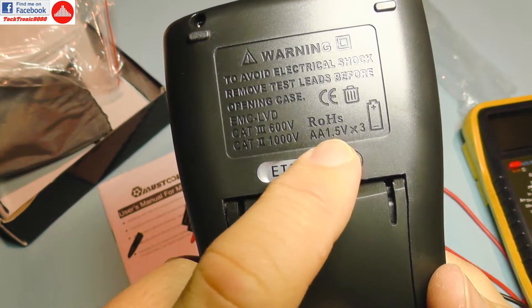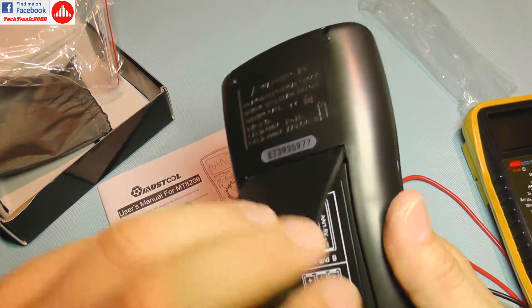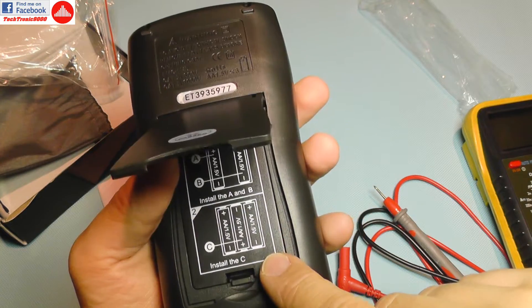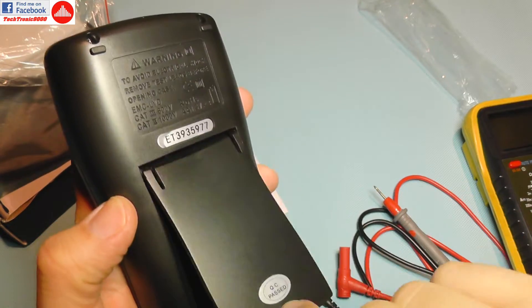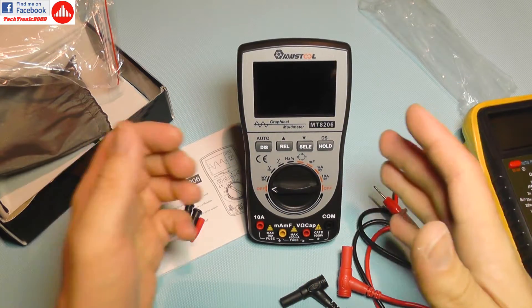This thing comes without batteries and it uses three double-A batteries which you need to provide. They are placed here in this slot and this is a very nice support so you can put it on the table like that. So I'm going to install batteries now.